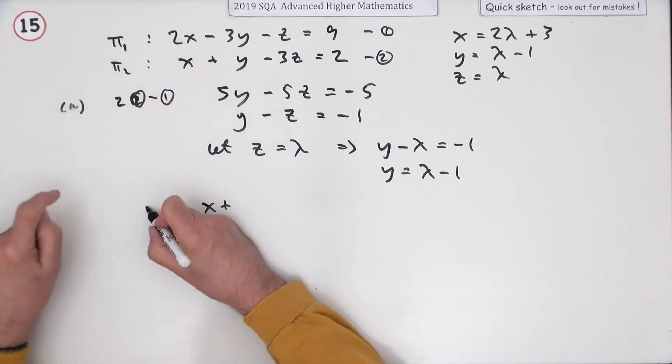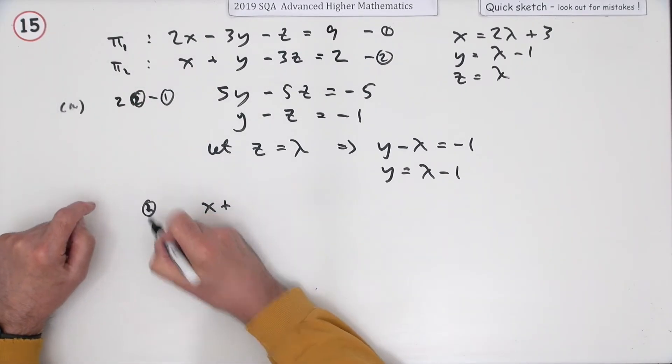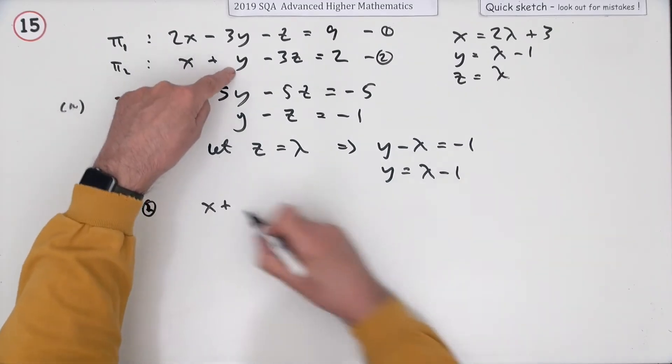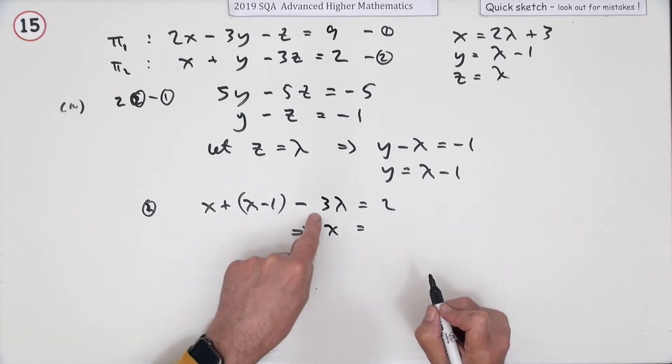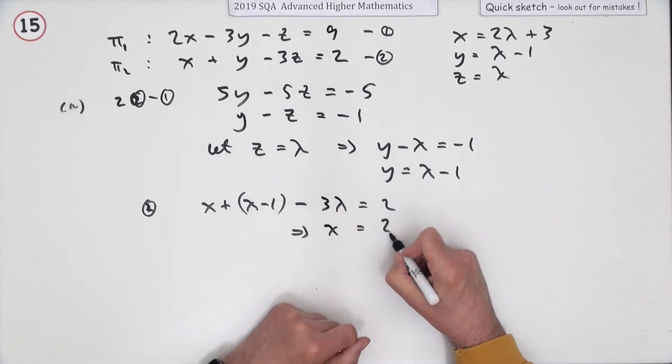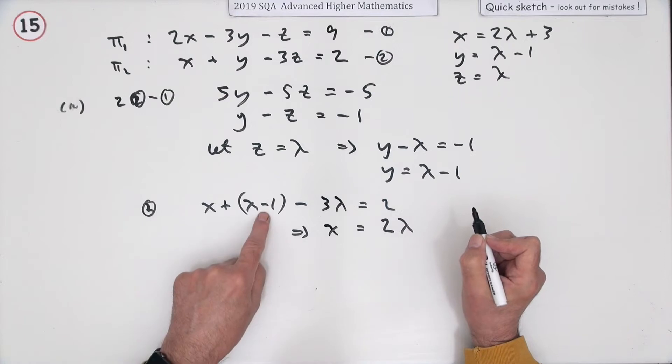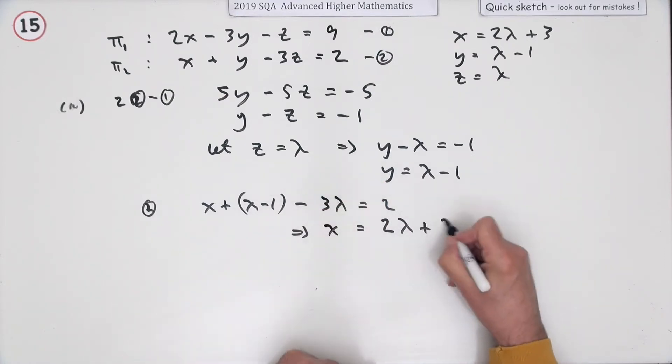Now, go back to one of those equations. X plus, this is equation two, from which you get X is equal to, well, that's negative 2, so it'll go across as 2 lambda, and that's negative 1, so it'll go across and add to make it plus 3.